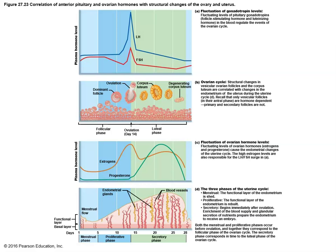Pregnancy is all about timing. If ovulation happens on day 14 of this cycle, the prime time to introduce sperm is perhaps late in day 12, all of day 13, and probably all of day 14. So days 13 and 14 are the prime times for intercourse to be most likely to fertilize the egg and produce a baby, if that's what you want. If that's not what you want, avoid intercourse for a couple days before and after your day 14 — that's called the timing method of birth control. That only works if you have a very regular and predictable menstrual cycle.